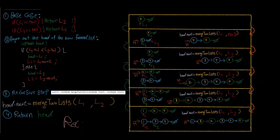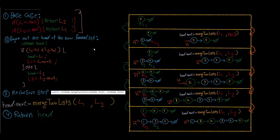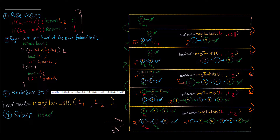Since we are creating sub-problems, this is the perfect case for recursion. In recursion we take this big problem and keep dissecting it into smaller and smaller parts until we reach the base case. I'll go through the code line by line, showing how everything interacts in the call stack, and come back to the base case at the end because it will make more sense that way.